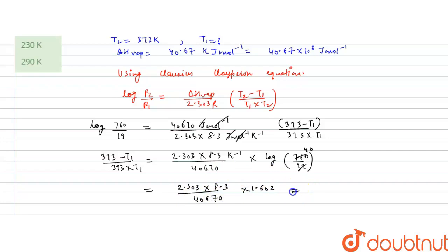This value will equal 0.007529 equals 373 minus T1 divided by 373 into T1.